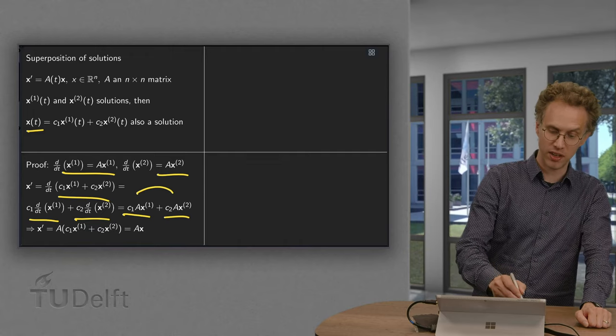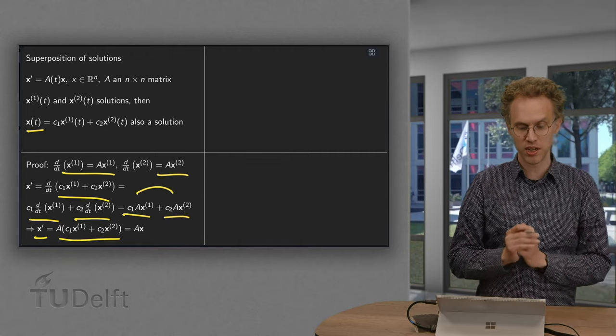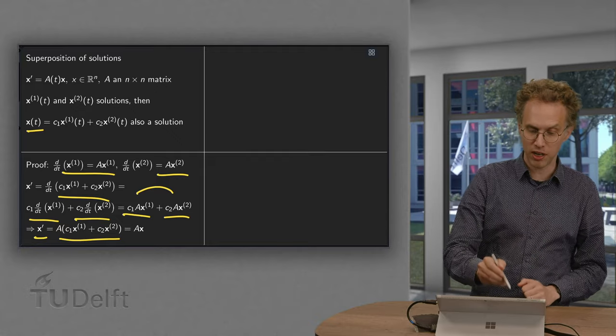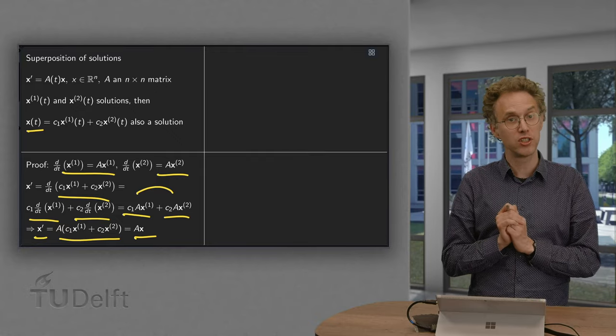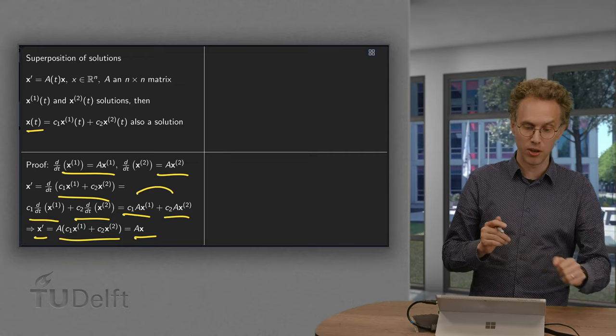Take the A's out. We get x prime equals A times c1 times x1 plus c2 times x2 equals A times x. So any linear combination of solutions is also a solution.